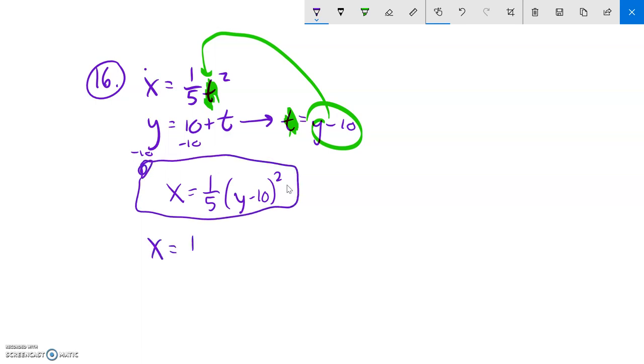If you wanted to multiply it out, you square y minus 10, so that's y squared minus 20y plus 100. And then you can distribute the one-fifth into there. One-fifth y squared. One-fifth times 20 is 4. One-fifth times 100 is 20.